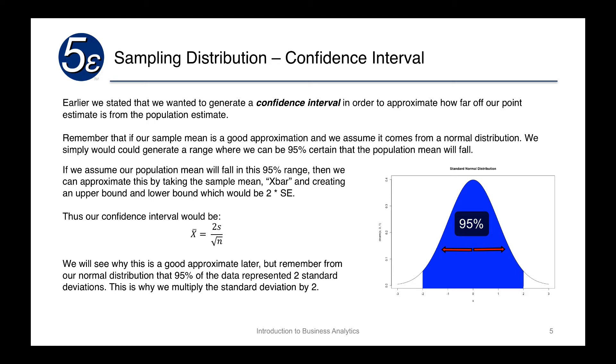And recall that we had two standard deviations, to the left and to the right, of the mean, which in this case is zero, because this is a standard normal distribution. We remember that 95% of the data will fall in this blue shaded region. So because it's normally distributed, we know that we can create an upper bound and a lower bound using this concept.